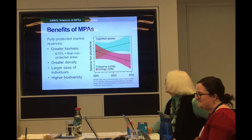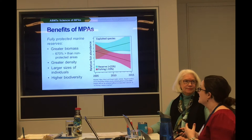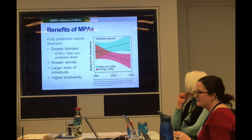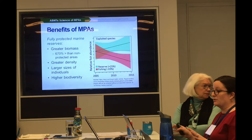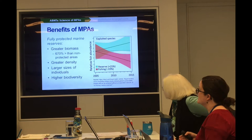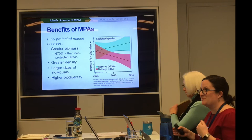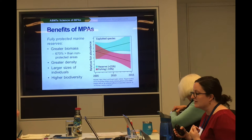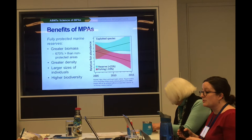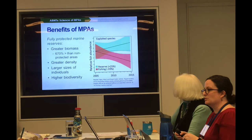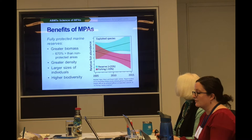Marine protected areas have the potential to mitigate and even reverse many of the negative impacts of these various threats. Scientists have identified key benefits over the last several decades. A new meta-analysis done just this year showed that biomass within marine reserves is on average 670% greater than adjacent unprotected areas, and 343% greater than partially protected MPAs. MPAs can also be expected to have greater density of fish species, larger individual sizes, higher biomass, and higher biodiversity.